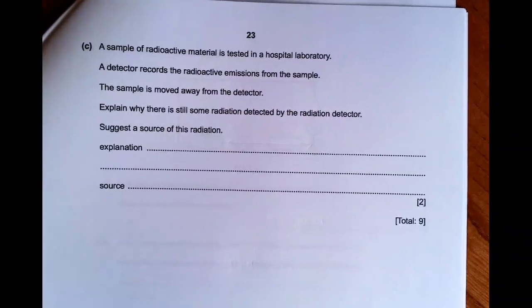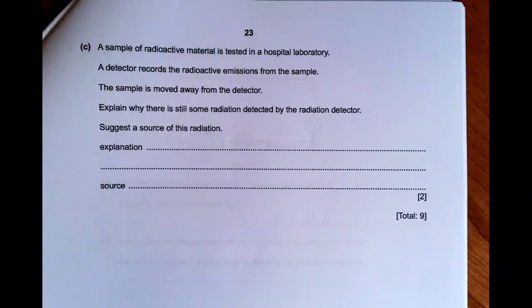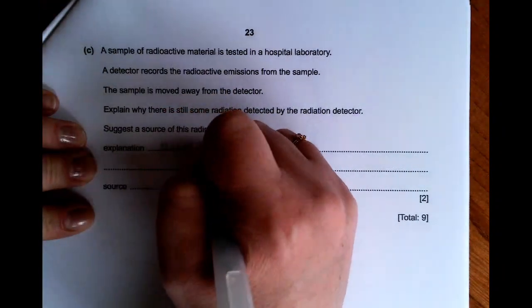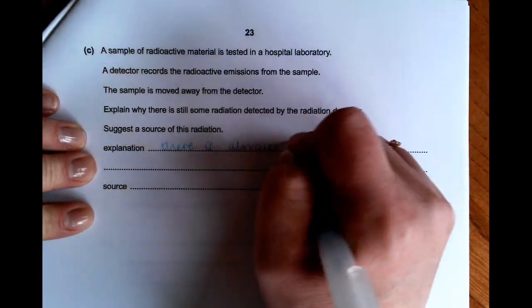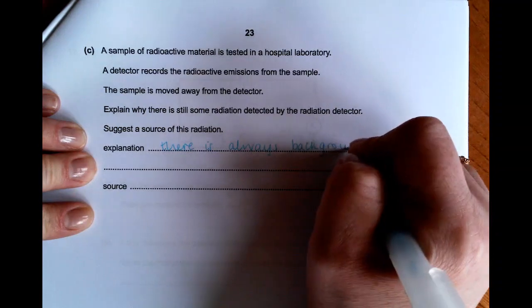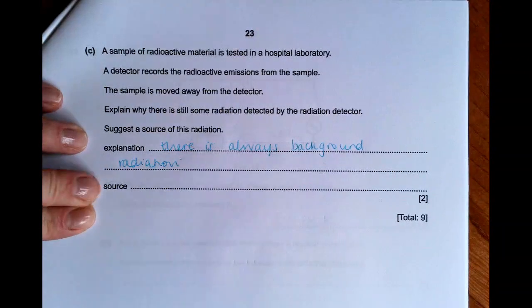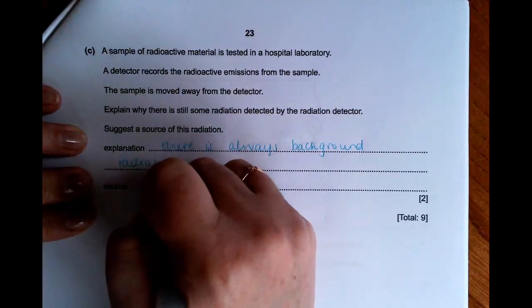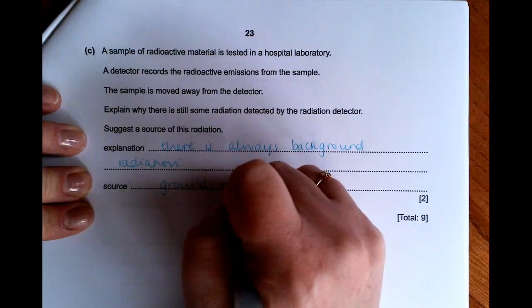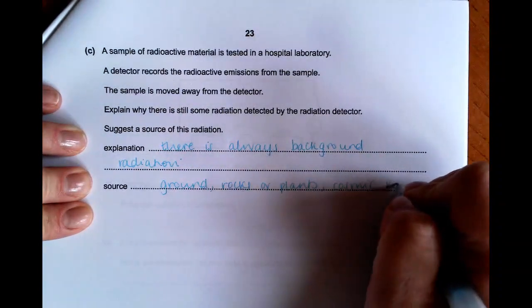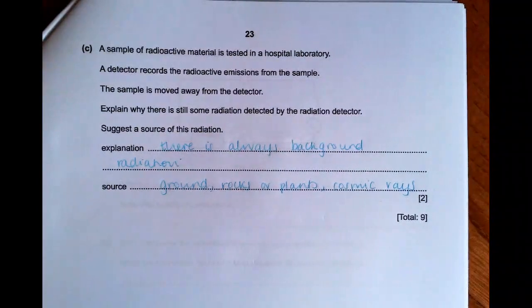In part C, it's still about radioactivity. You've got a radioactive material tested in a hotel lab. The sample has moved away from the detector. Explain why there is still some radiation detected by the radiation detector. There is always background radiation. Even without a particular radioactive source, there is always background radiation. And that could come from the ground is a common source. It could have come from rocks or plants, and it could have come from cosmic rays. Those are some options that you could have given for where that comes from.